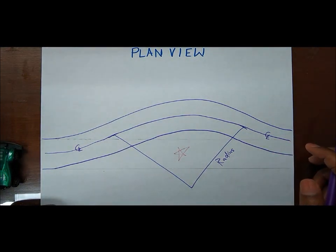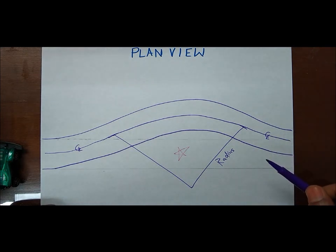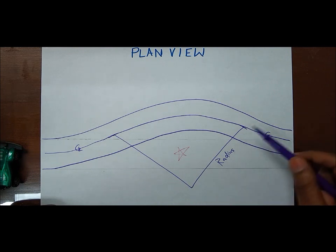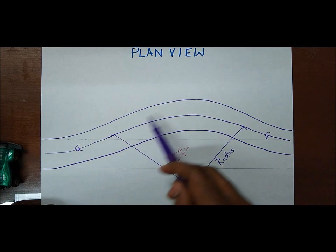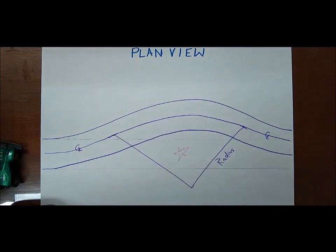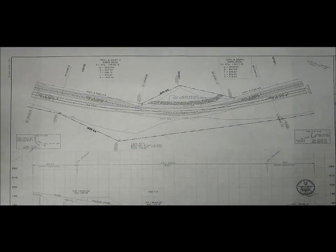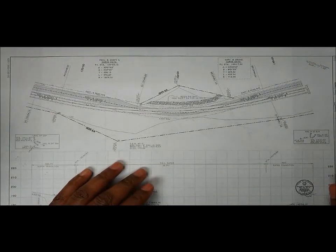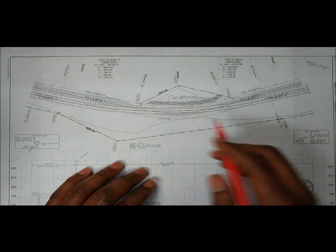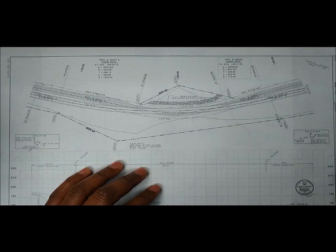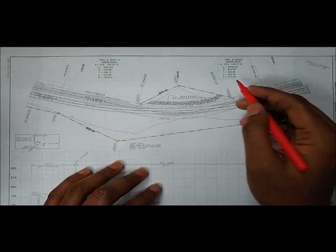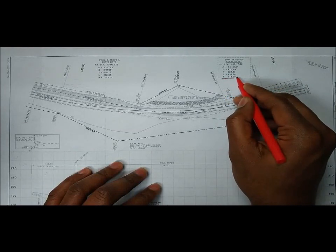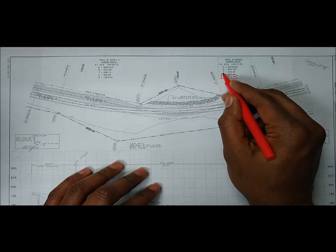Today we'll talk about how to calculate the radius, or more specifically, what is the minimum amount of radius required to satisfy a speed on the proposed road. Take this road for example — it has been planned to be rerouted or reconstructed, and on this sheet you can see that the radius has already been calculated.